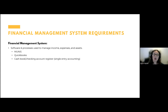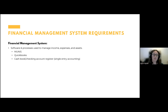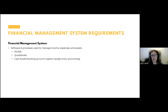A financial management system is the software and processes used to manage income, expenses, and assets — what I'd colloquially call 'the books,' the accounting ledger. Software used to track your accounting system would include programs like Munis, or for smaller private schools, QuickBooks. If you don't have software, you may have processes using a cash book or checking account register — single entry accounting. Accounting software is not a requirement; it's just a common financial management system.